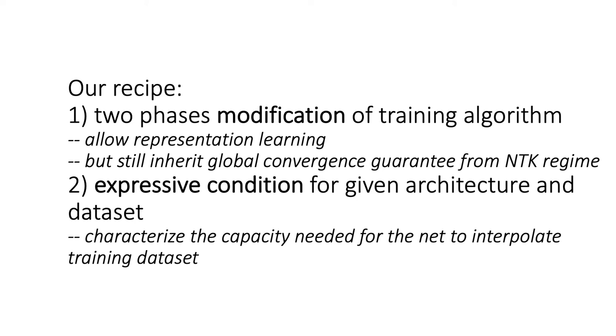In this talk, we give our recipe that follows this principle. First, in terms of algorithm, we come up with a two-phase modification to your favorite training algorithm like SGD or ADAM. Our modified algorithm would allow representation learning but still inherit global convergence guarantee from NTK regime. The second part of the recipe is a criteria to check, which is the expressivity condition for a given architecture and dataset pair. It characterizes the capacity needed for the network to interpolate the training dataset.